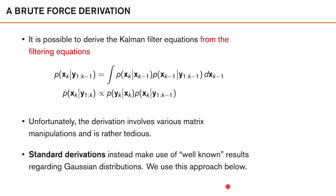The objective of this lecture is to use these models and assumptions to derive analytical expressions for the predicted density — that is, the density over X given measurements up to time k — and for the posterior density, which is the density over X conditioned also on the measurement at the current time. There are many ways to derive the Kalman filter expressions. One possible way is to plug in the Gaussian densities into the filtering equations and solve them, but this involves various matrix manipulations and is rather tedious. Instead, we present a more standard derivation using well-known results regarding Gaussian distributions, which will also give better intuition for the non-linear filters based on the Kalman filter covered later in this course.